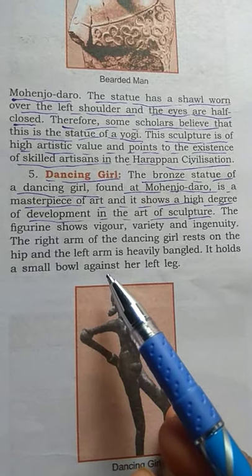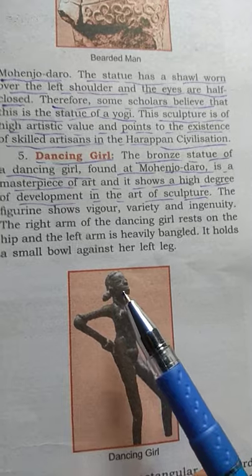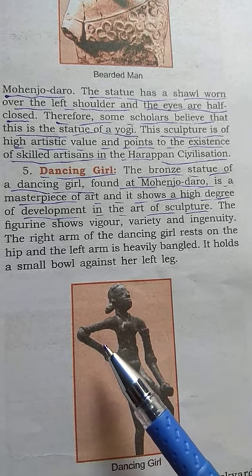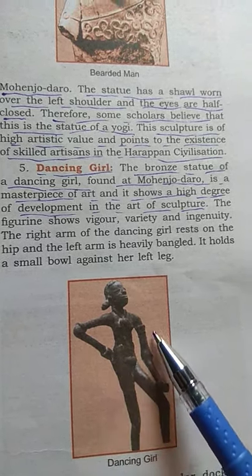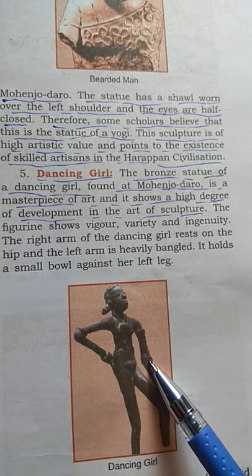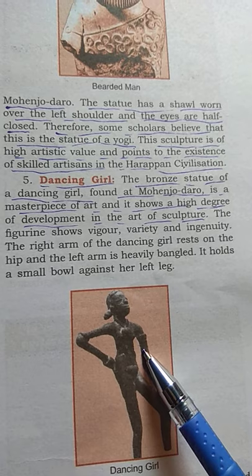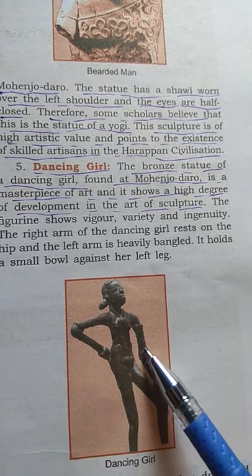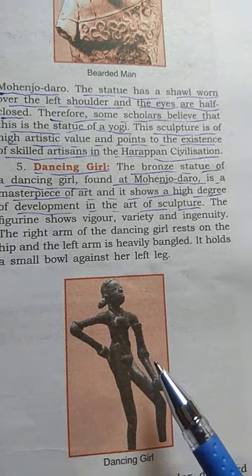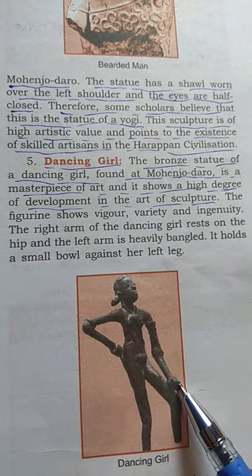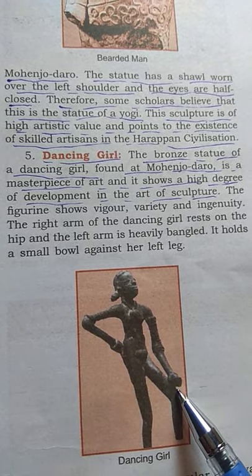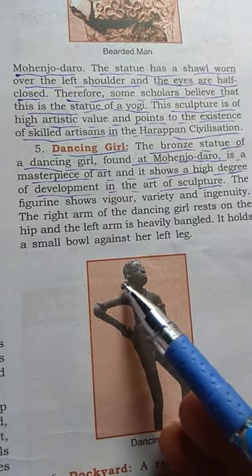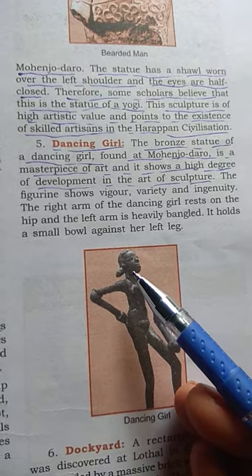The right arm is kept on her hip, and the left hand is heavily bangled, with bangles shown on the left hand, which holds a small ball against her leg. This statue is also very useful for studying the Indus Valley civilization.